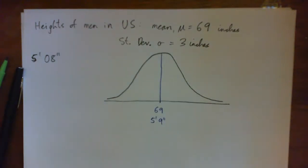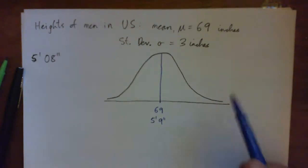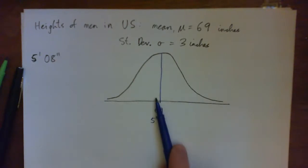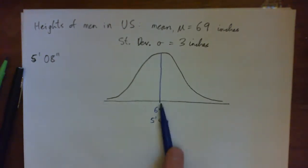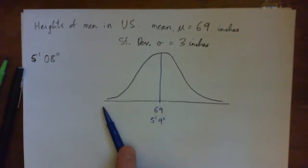The first thing to understand is that 50% of men are taller than 5 foot 9 and 50% are shorter. If you're taller than 5 foot 9 you're above average; if you're shorter than 5 foot 9 you're below average.